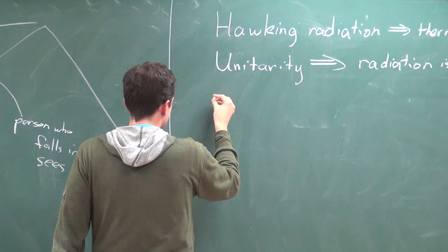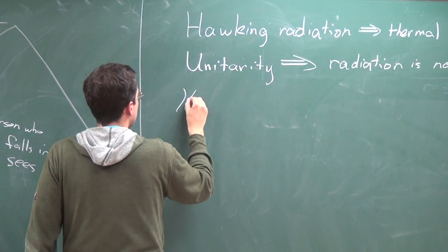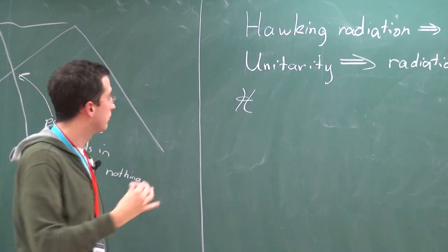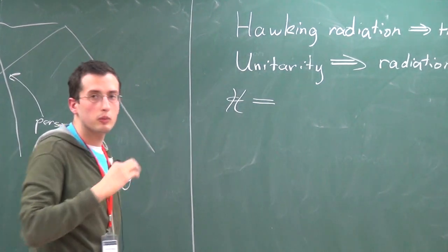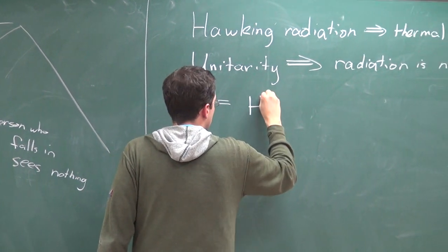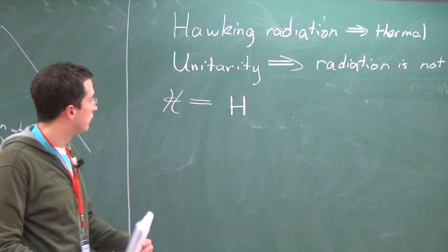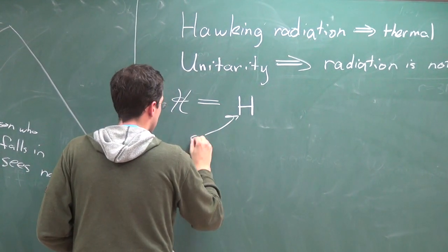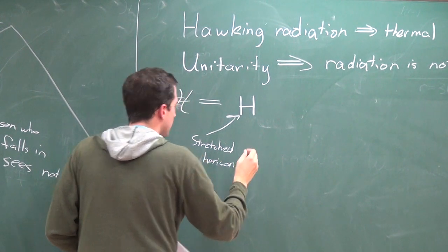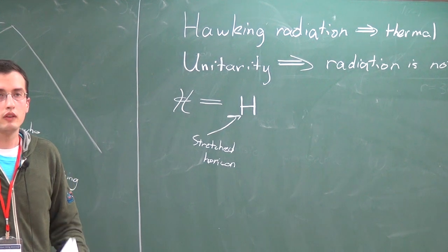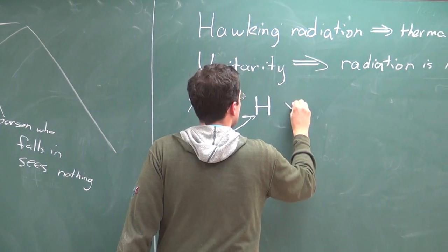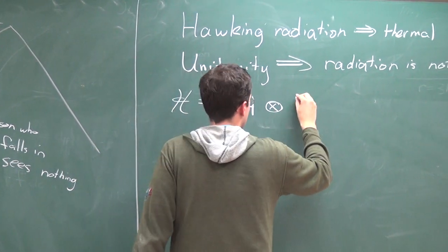If we look at the Hilbert space of a black hole system from the point of view of an outside observer: the Hilbert space of this evaporating black hole has several factors. First, there's one factor which consists of the horizon — the stretched horizon — with complicated dynamics and its own Hilbert space of size equal to the entropy of the black hole. The second factor is the radiation coming out of the black hole — the part already evaporated — versus the part which is left over.